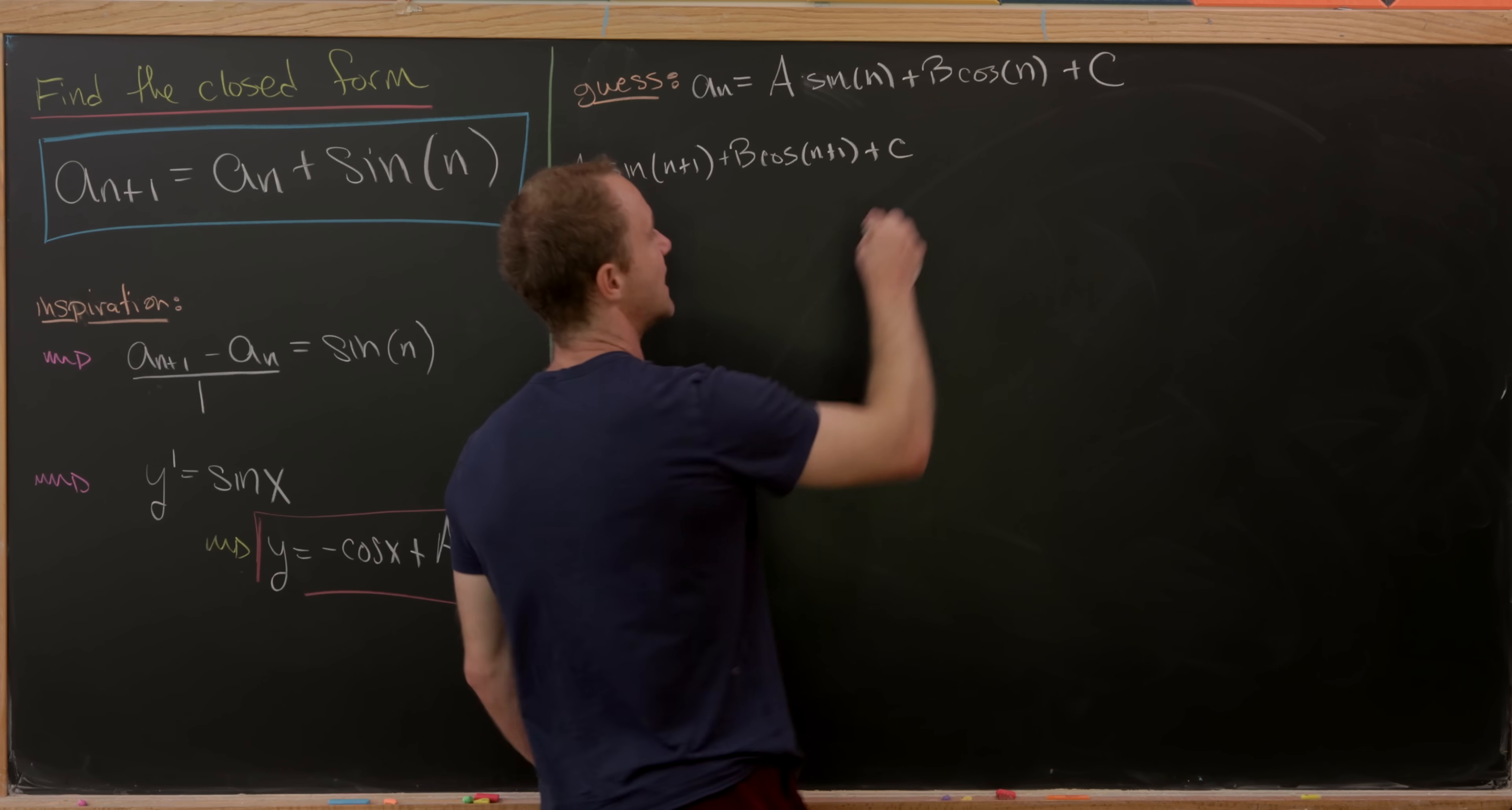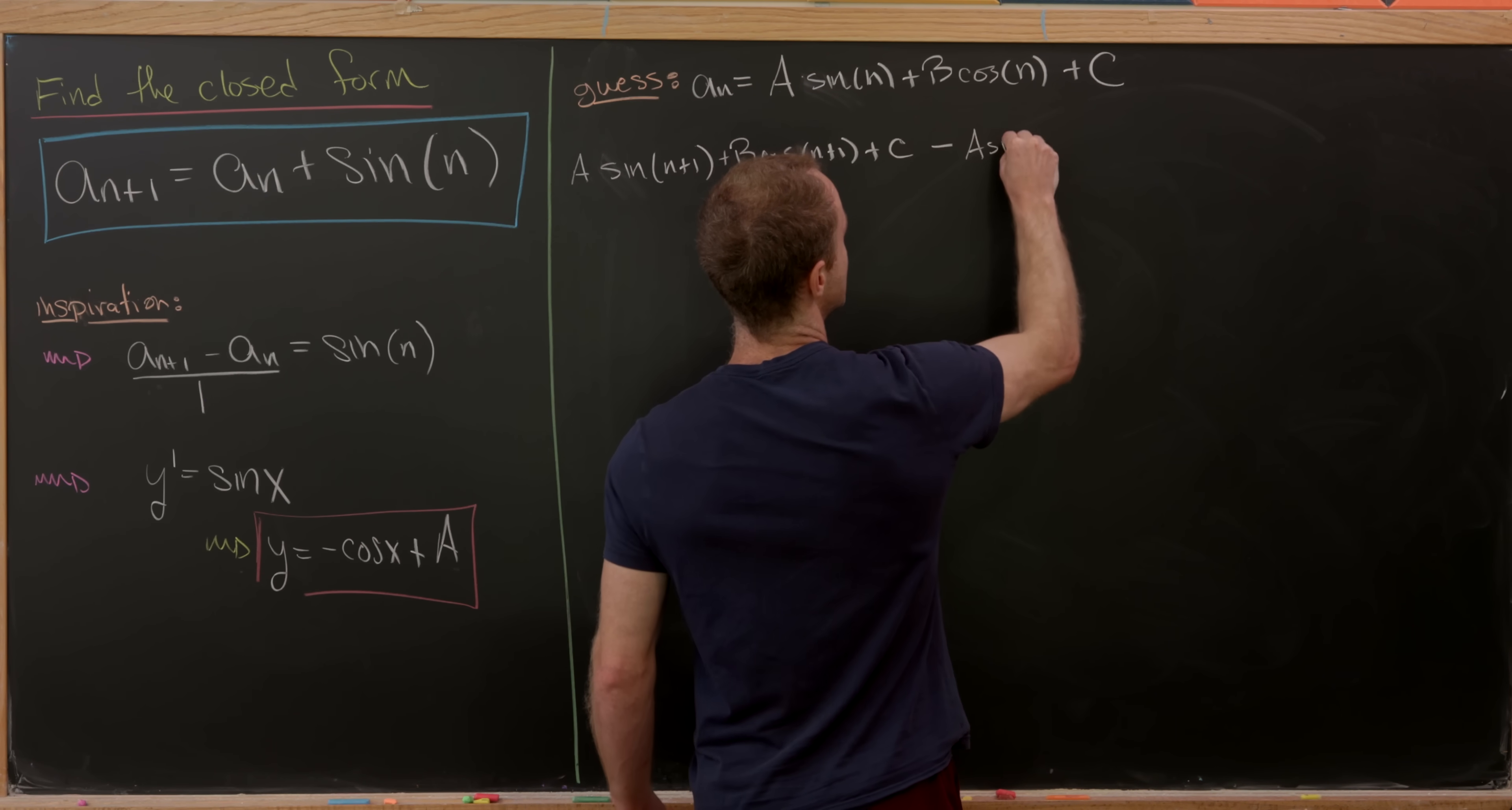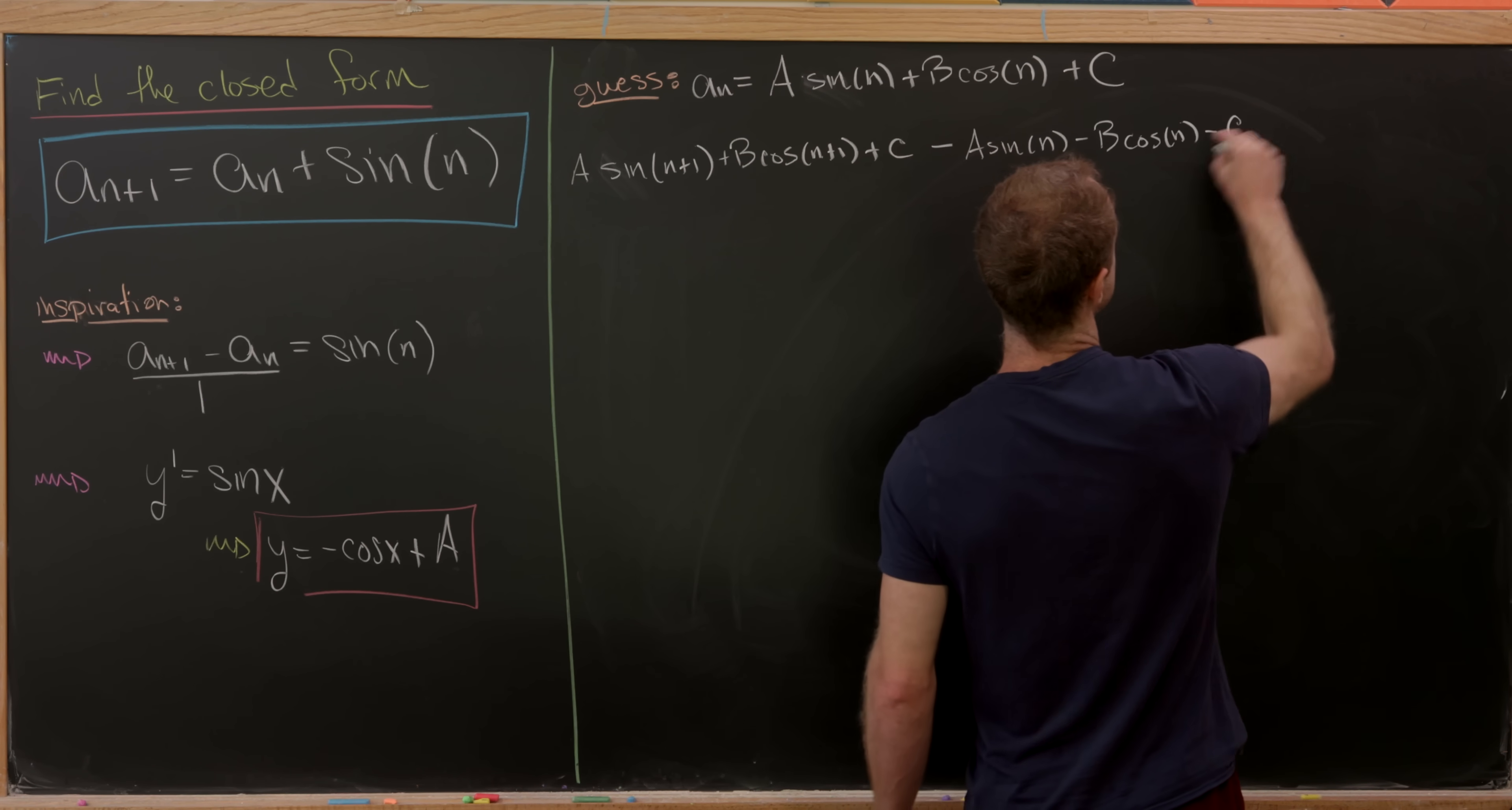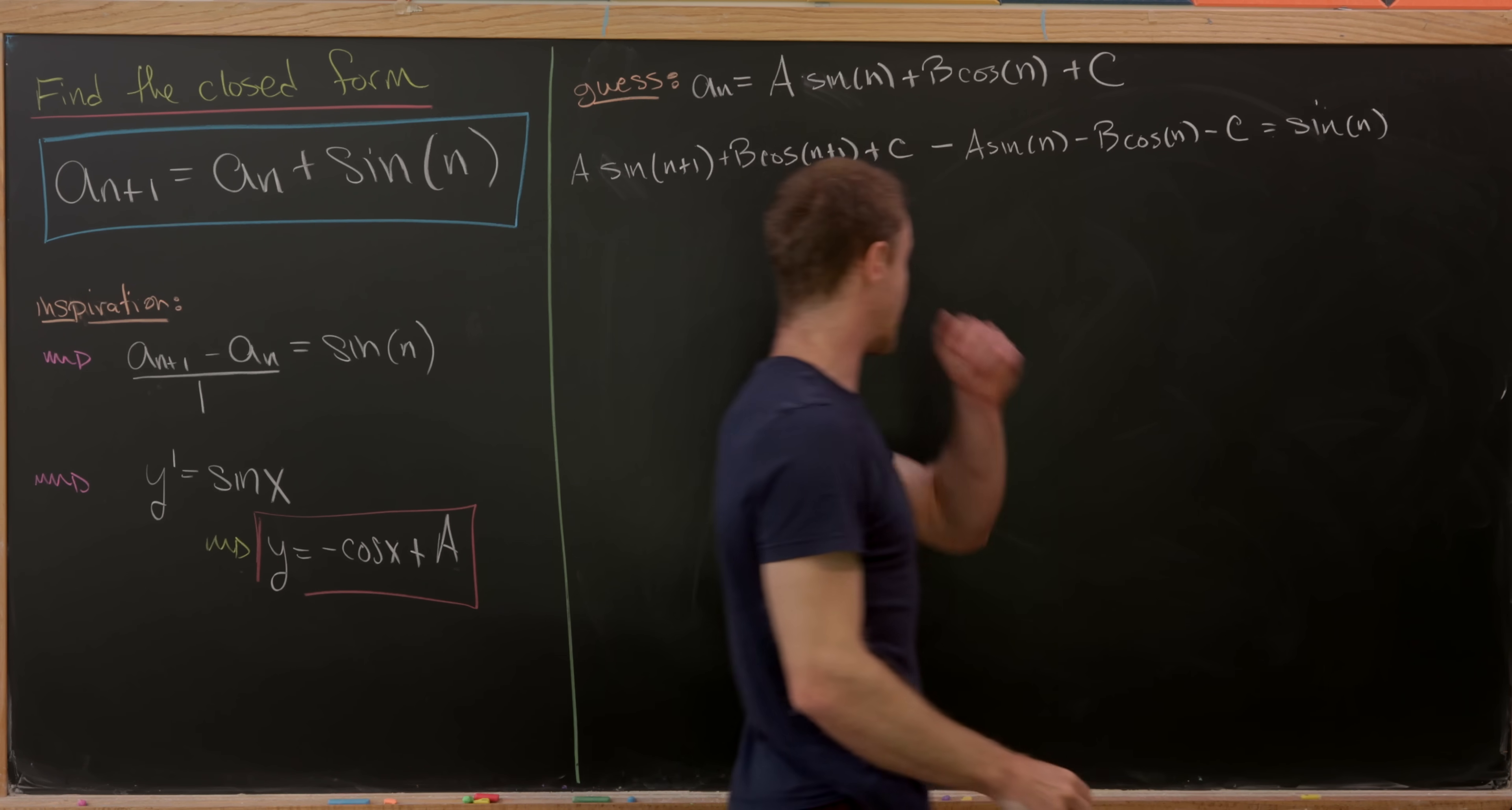That's our a n plus 1. And then from that, we need to subtract a n. So that'll be a sine of n minus b cosine of n minus c. And this all needs to be equal to sine of n.